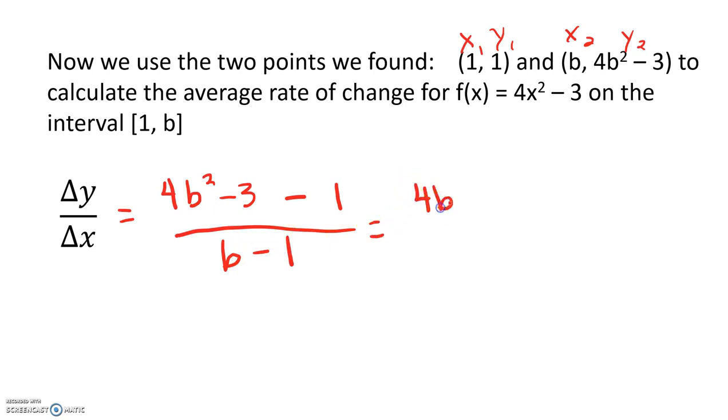I see that we have a greatest common factor in the numerator, so we factor out a 4. This leaves us with b² minus 1, and that's still over b minus 1.